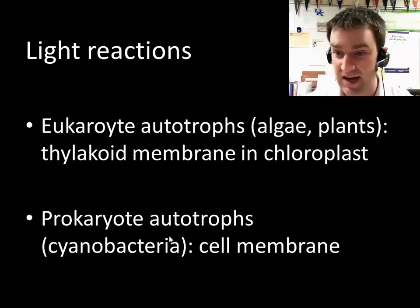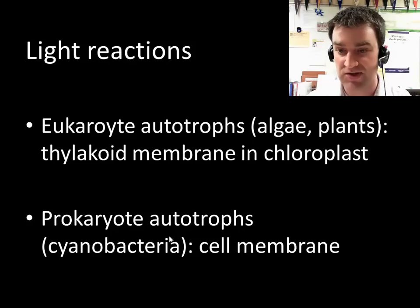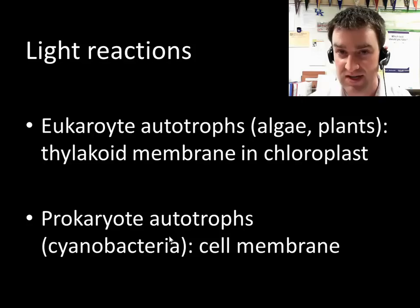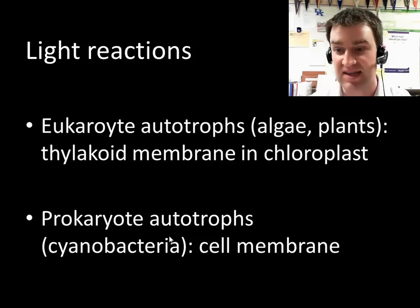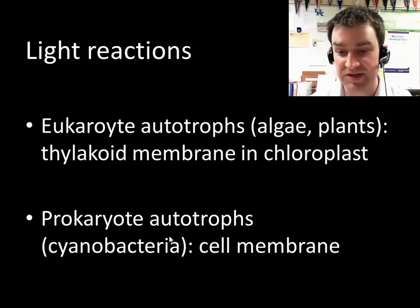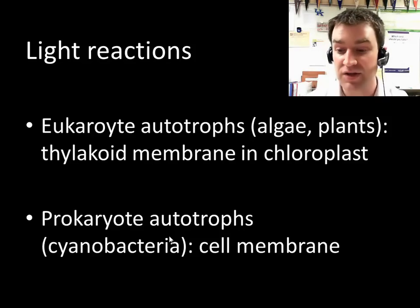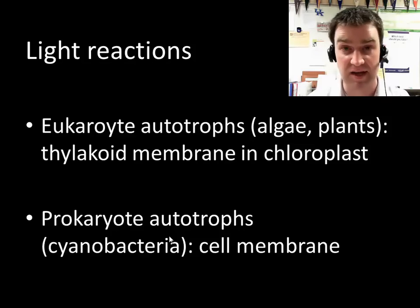Where do the light reactions take place? That whole diagram assumed a eukaryotic autotroph like a plant — for them, the light reactions are a series of proteins embedded in the thylakoid membrane, the inner membrane of the chloroplast. Remember that prokaryotes can also do photosynthesis; they just have those same set of proteins embedded in the cell membrane.